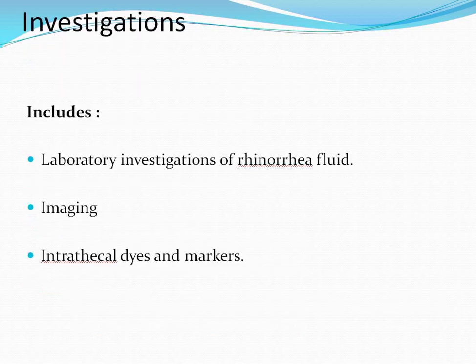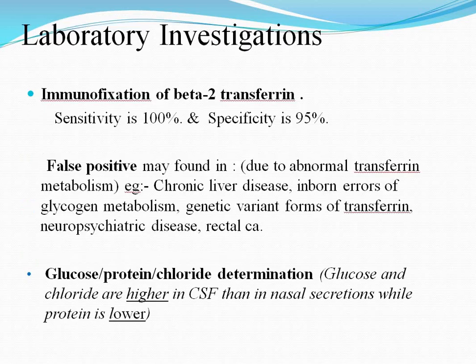In laboratory investigation, imaging, and intrathecal dye markers: immunofixation of beta-2 transferrin has a sensitivity of 100% and specificity of 95%. A false positive may be found due to abnormal transferrin metabolism, seen in chronic liver disease, inborn errors of glycogen metabolism, genetic variations of transferrin, and neuropsychiatric disease. Glucose, protein, and chloride determination: glucose and chloride are higher in CSF than in nasal secretion, while protein is lower.